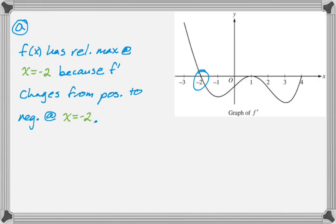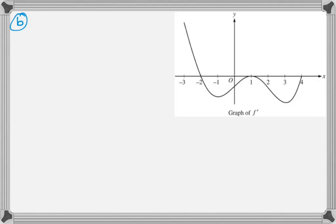Let's move on to part B. So part B is a question about where on the interval negative 3 to 4 is the graph of f both concave down and decreasing? So let's take it a piece at a time. So f is concave down when f' is decreasing.